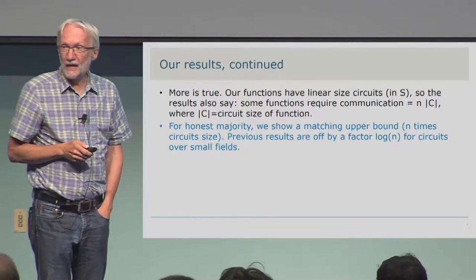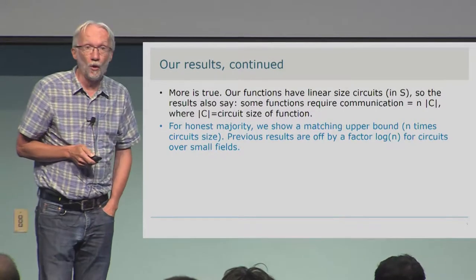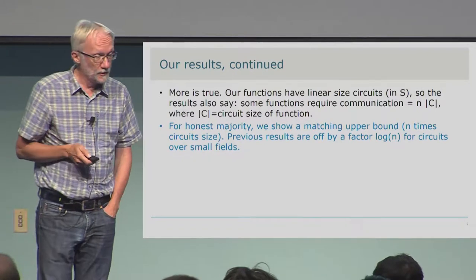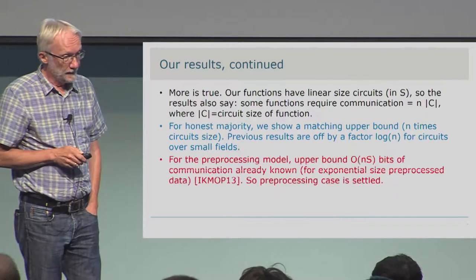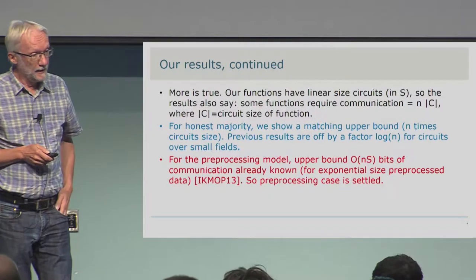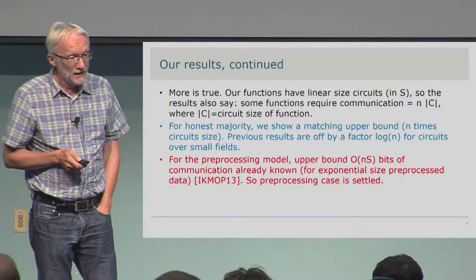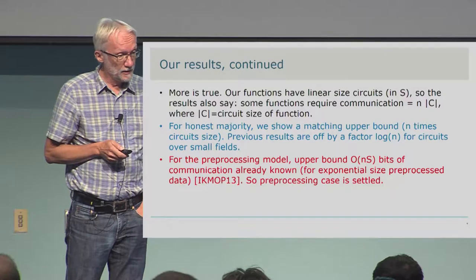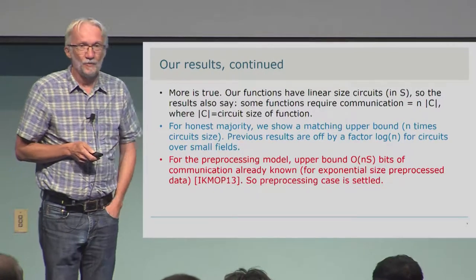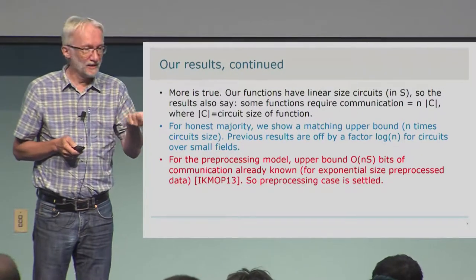For honest majority, we have a matching upper bound of n times the circuit size. That's motivated by the fact that previous results were off by a factor of log n for circuits over small fields such as Boolean circuits. For the preprocessing model, there was already an upper bound shown in a paper from 2013 by Ishai et al.: the upper bound is n times s bits of communication. This requires exponential-size preprocessed data, but if you can live with that, the preprocessing case is essentially settled — the answer is n times input size.